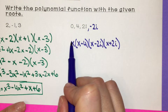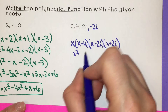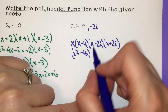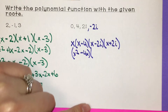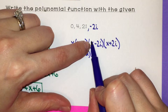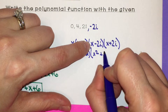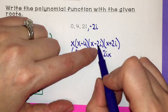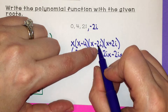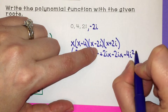I'll start by multiplying the first two factors together: x times x is x squared, x times negative 4 is negative 4x. Then I'll multiply the conjugate pair: x times x is x squared, x times 2i is positive 2ix, negative 2i times x is negative 2ix, and negative 2i times 2i gives us negative 4i squared.